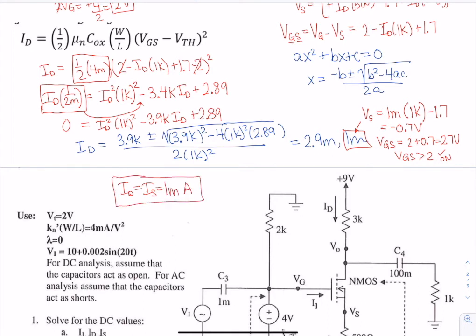So this one will be the correct one, and so we will say that ID is equal to IS is equal to 1 milliamp. We also knew that VG was 2 volts, and VS we found as minus 0.7 volts. So these are values we found so far.